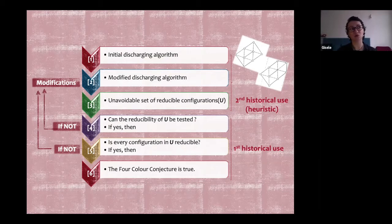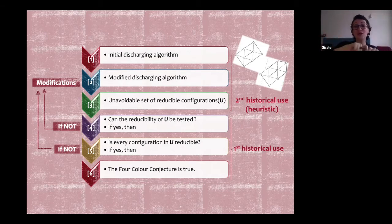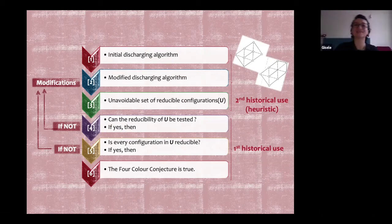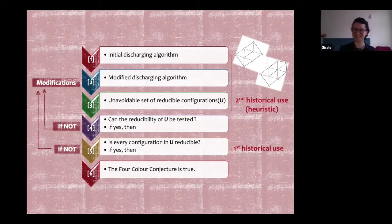The construction of the unavoidable set of configurations began as a heuristic use. Heesch started making it by hand, and the computer was used for some time, then abandoned as too complex to implement. But between steps four and six, the computer was critically used. They tested whether the set was reducible with an algorithm; if not, they rewrote the program and tried again. They talk in vocabulary of testing, experimenting. This is one reason why later mathematicians and philosophers said this is not mathematics — it's experimental science because they were testing it.